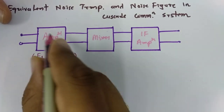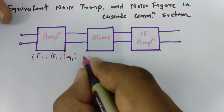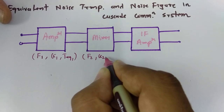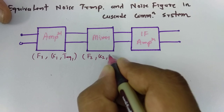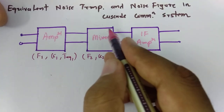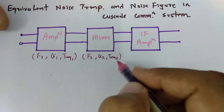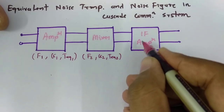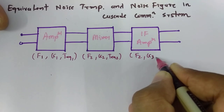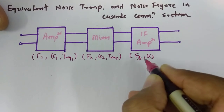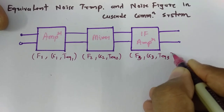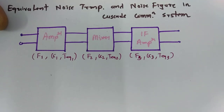For the second block, the noise figure is F2, gain is G2, and equivalent noise temperature is T-equivalent-2. For the third block, the noise figure is F3, gain is G3, and equivalent noise temperature is T-equivalent-3.